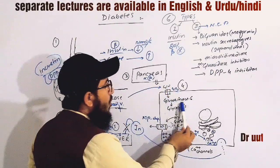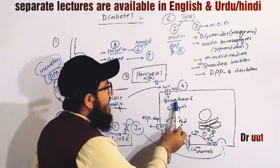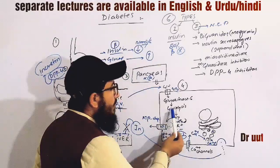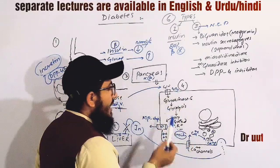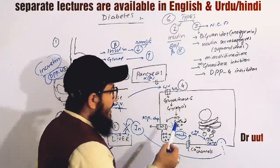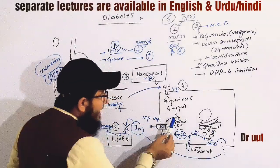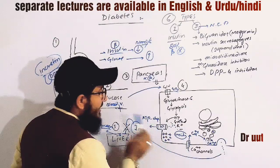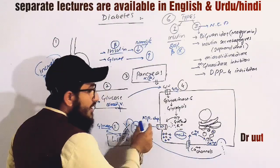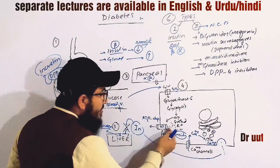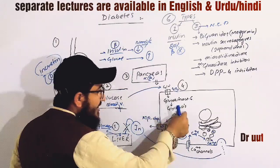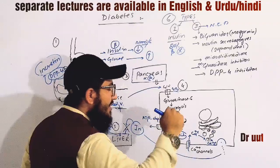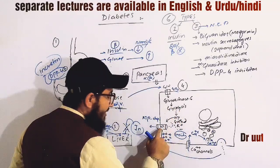Inside the beta cell, we have glucokinase. This enzyme will perform the metabolism of glucose, meaning it will carry out glycolysis. After certain steps, ATP is produced. This ATP acts on an ATP-dependent potassium gate. Normally potassium is moving out, but when glucose arrives and ATP is formed, as its concentration increases, ATP will block the gate.